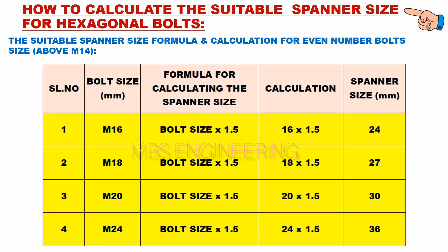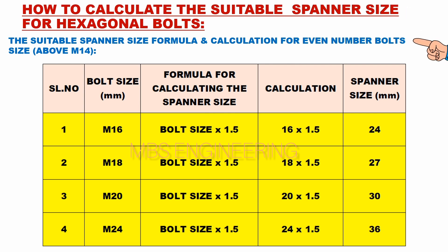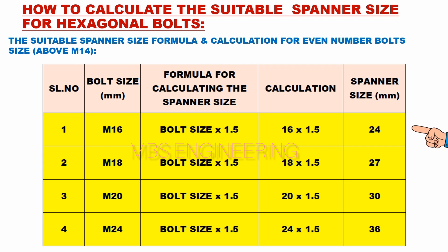The suitable spanner size formula and calculation for even number bolts grade above M14 is listed below. Based on the above data and calculation, the suitable spanner size for bolt size M16 is 24 mm.